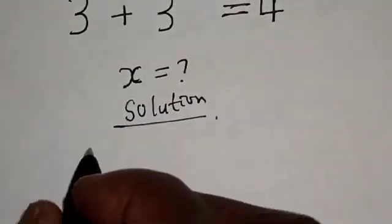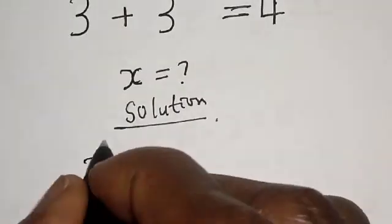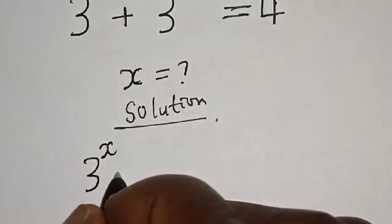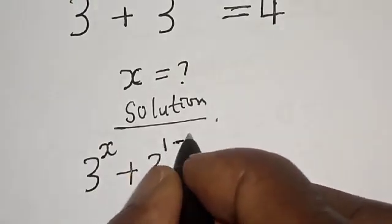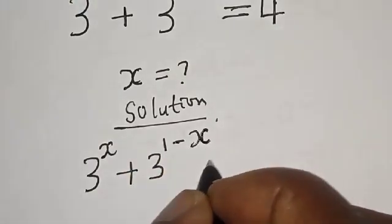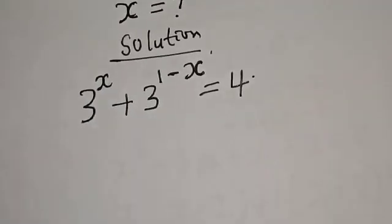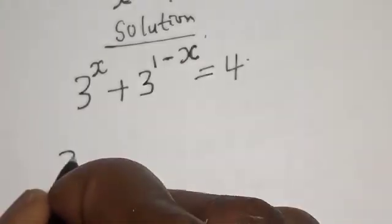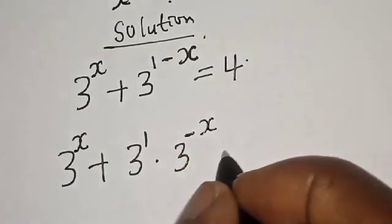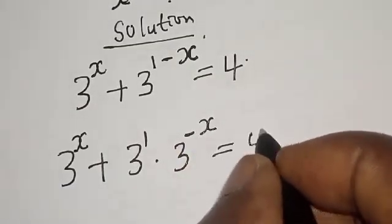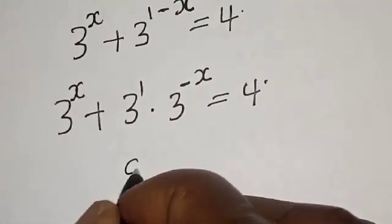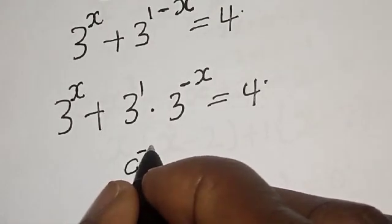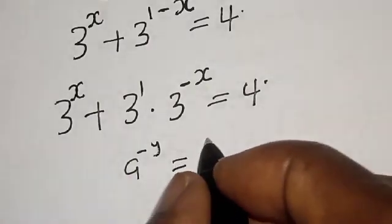We have the given equation: 3 raised to power x plus 3 raised to power 1 minus x is equal to 4. Then we have 3 raised to power x plus 3 raised to power 1 multiplied by 3 raised to power minus x is equal to 4.